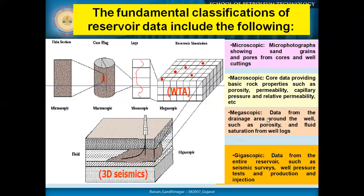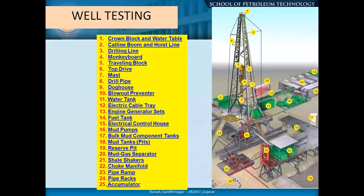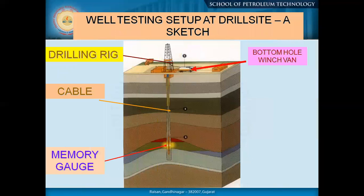Now this is the well site — just a picture with a lot of things there. In the early stage of transient well testing, we may have to go to the drill site when the drill rig is still there and conduct our study. We need to carry a bottom-hole instrument along with the winch, where we have the wire through which we lower our instrument to the desired depth. You see the electronic memory gauge through the cable — that is the setup.